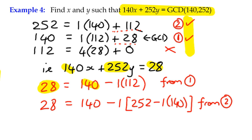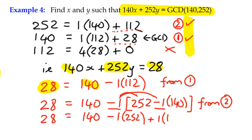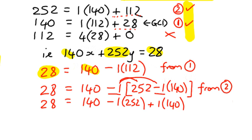So let's tidy that up. We're saying that 28 is 1 lot of 140. And then if we say minus 1 lot of 252, and then plus, because it's minus negative, 1 times negative 1 is plus 1 lot of 140. If I simplify that, we can say that 28 is actually 2 lots of 140 because we've got 1 there and we've got 1 there. 2 lots of 140 minus 1 lot of 252.